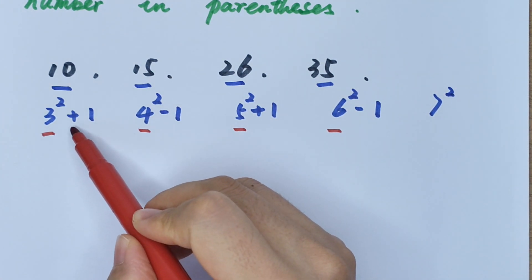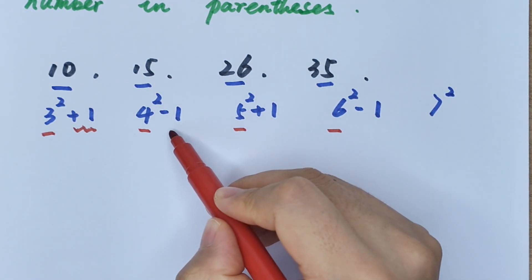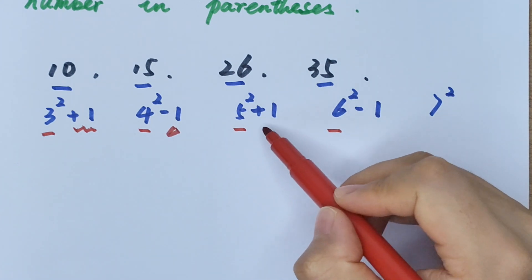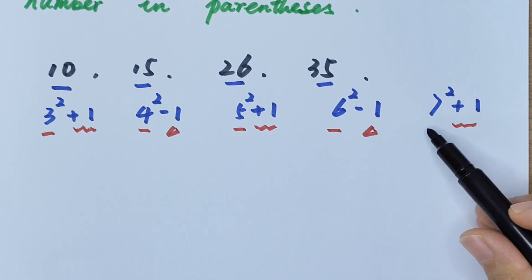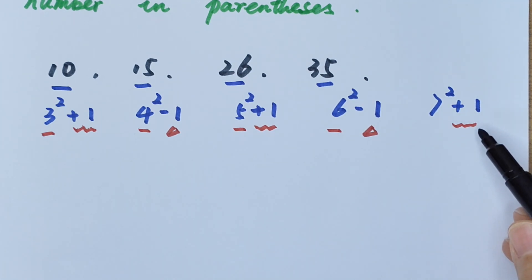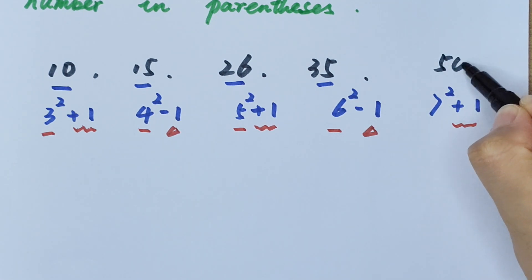Here is plus 1, and here is minus 1, plus 1, minus 1. So here is plus 1.